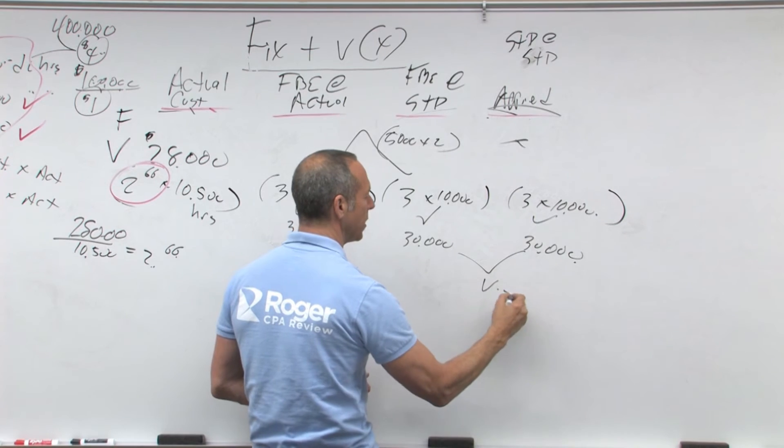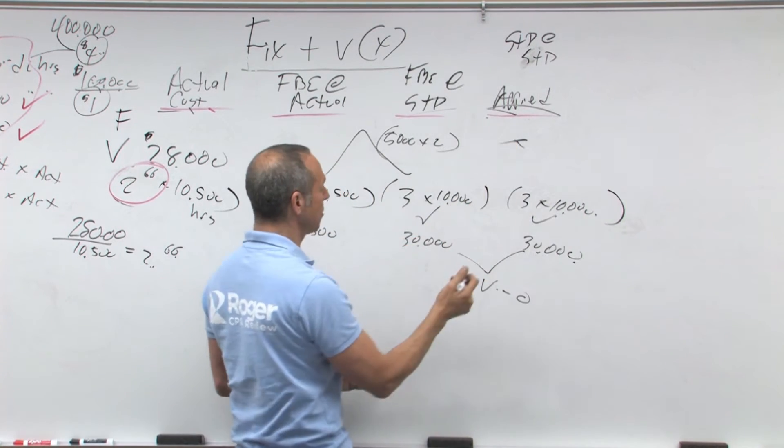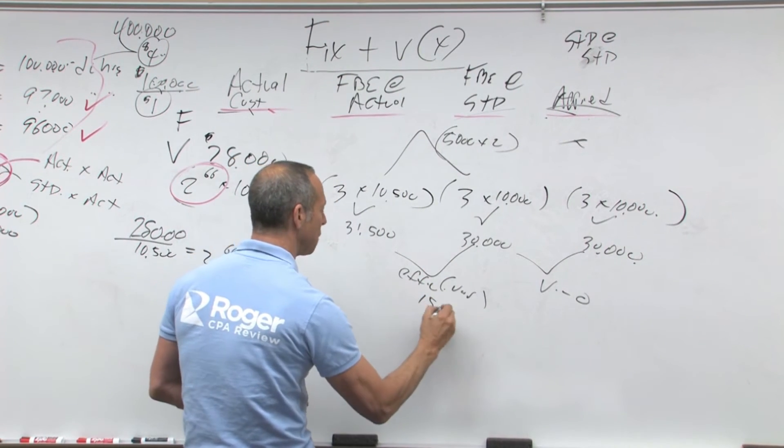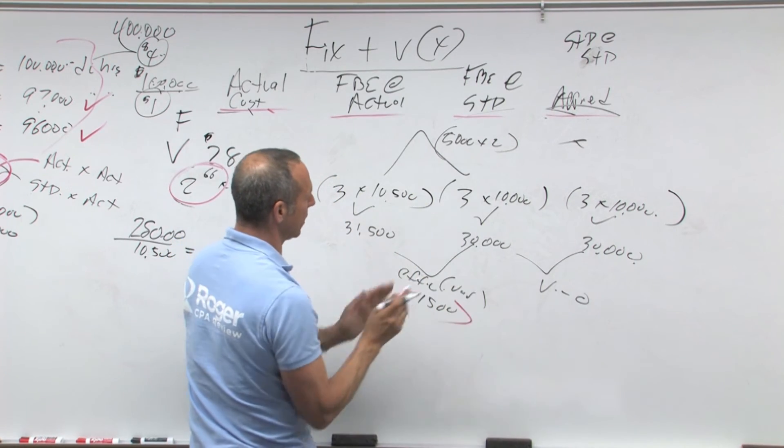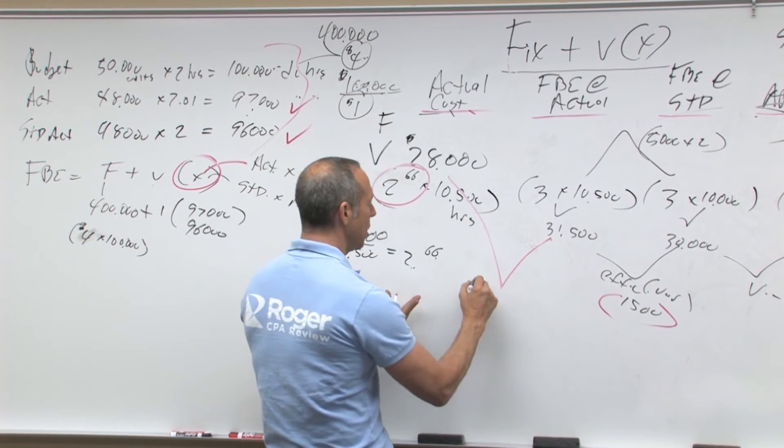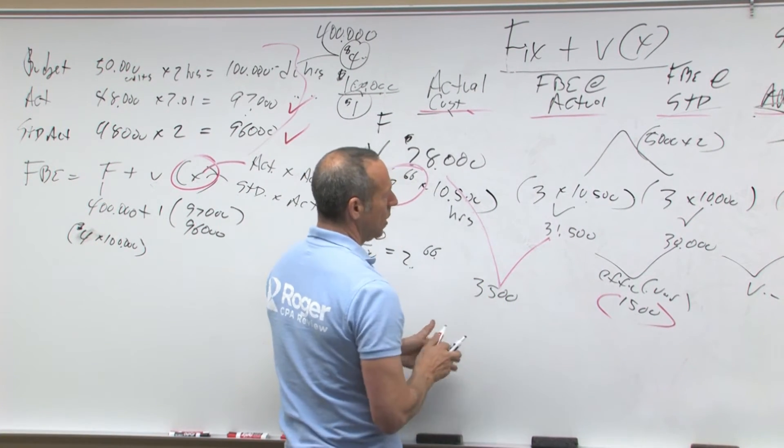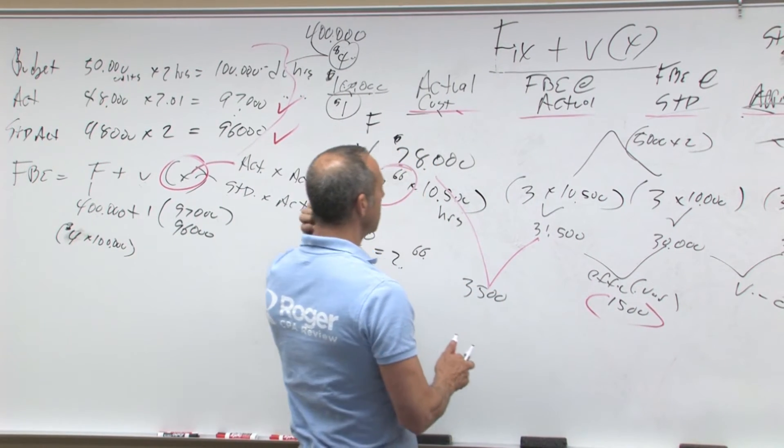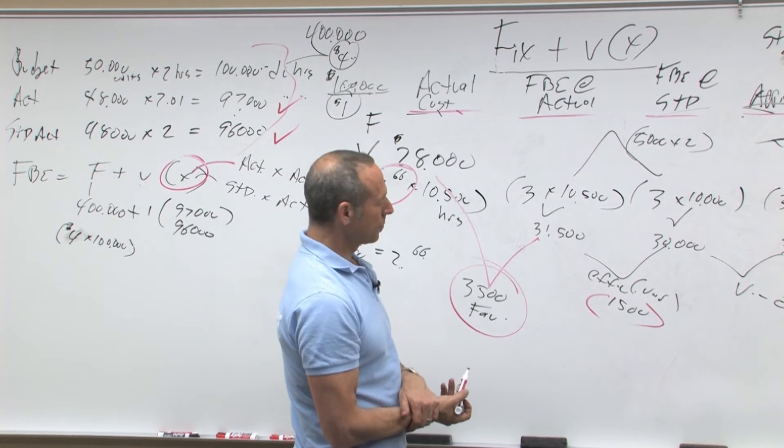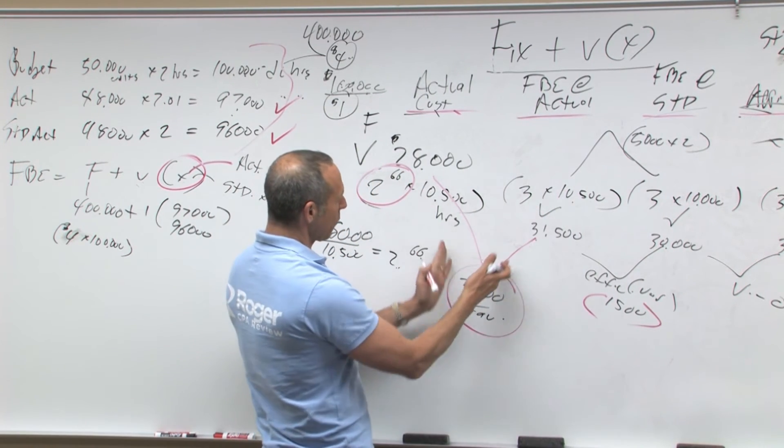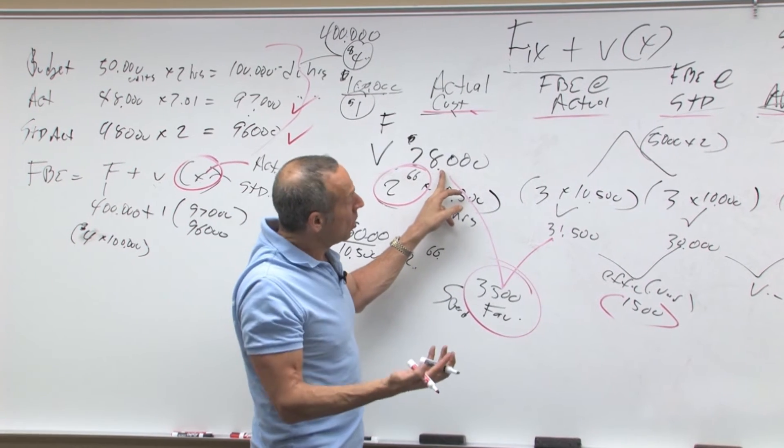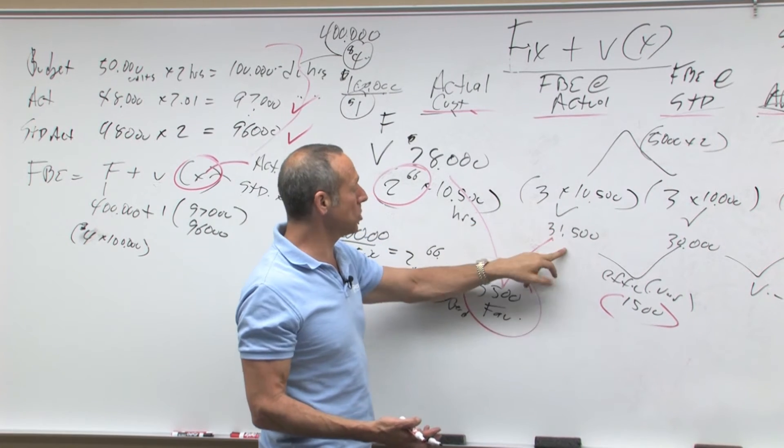So obviously, this is our volume variance, which is zero, because it's not variable, it's all fixed. This is going to be our efficiency variance, which is all variable, so it's going to be 1,500 unfavorable, because this is bigger than this. This they didn't ask for is going to be 28, 29, 30, 31, 3,500. And in looking at this 3,500, since this is bigger than this, this is favorable. This is the variable, this would be our spending variance. What happened? We actually spent 28,000, we basically, based on our budget, based on actual, should've spent 31,500. Oh, good job.